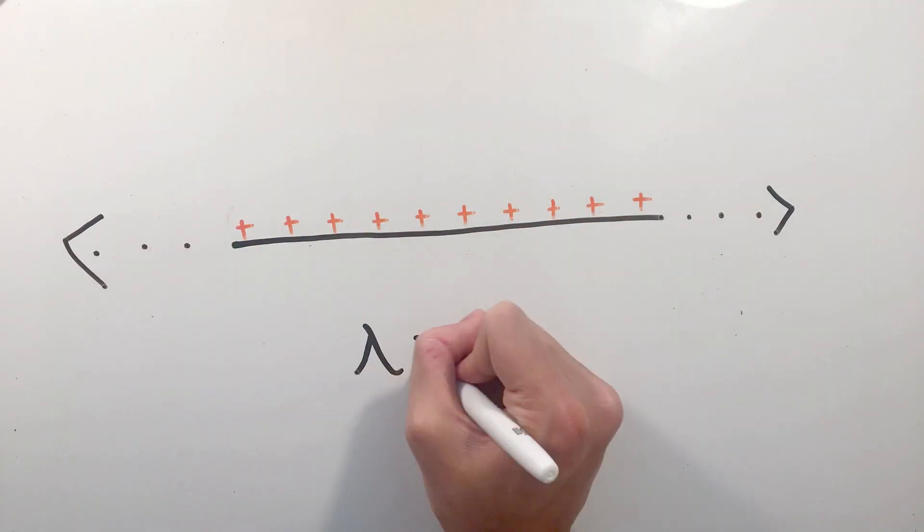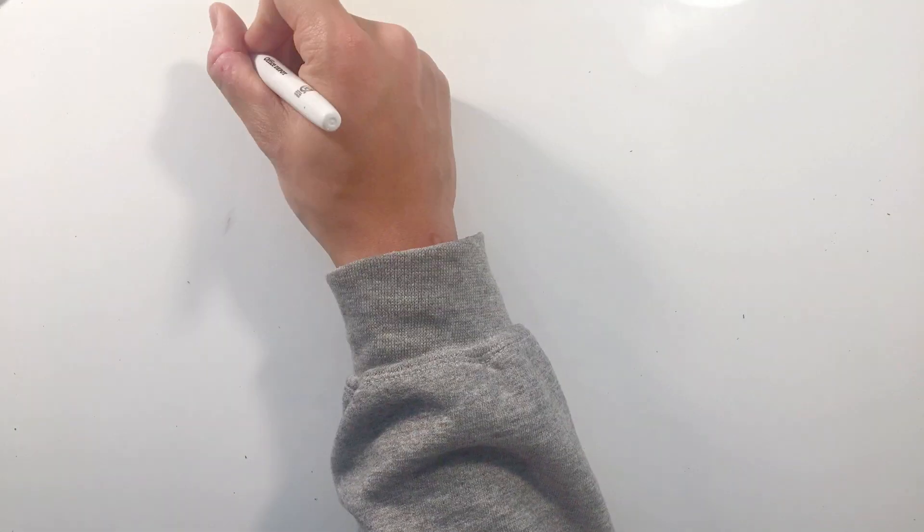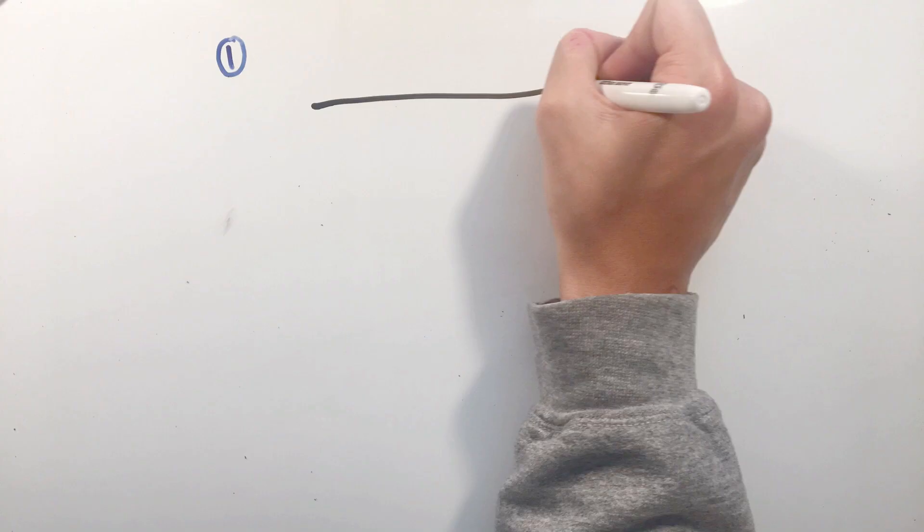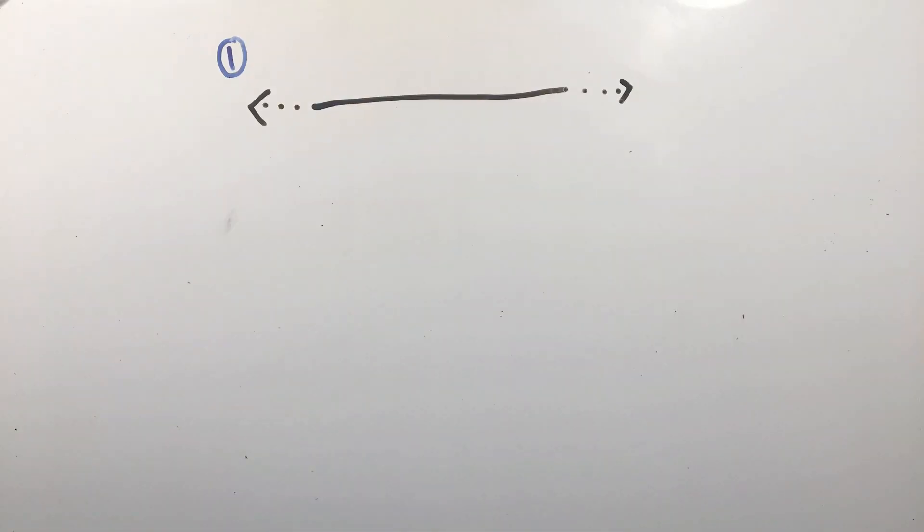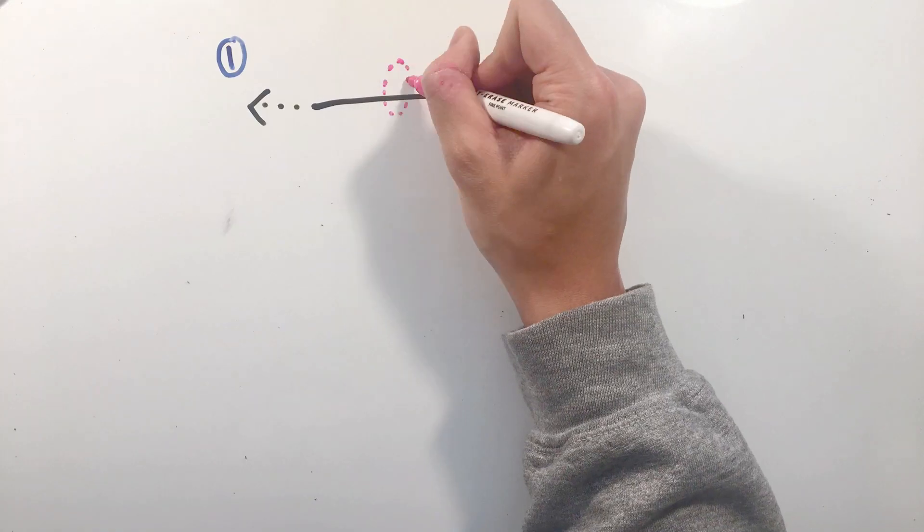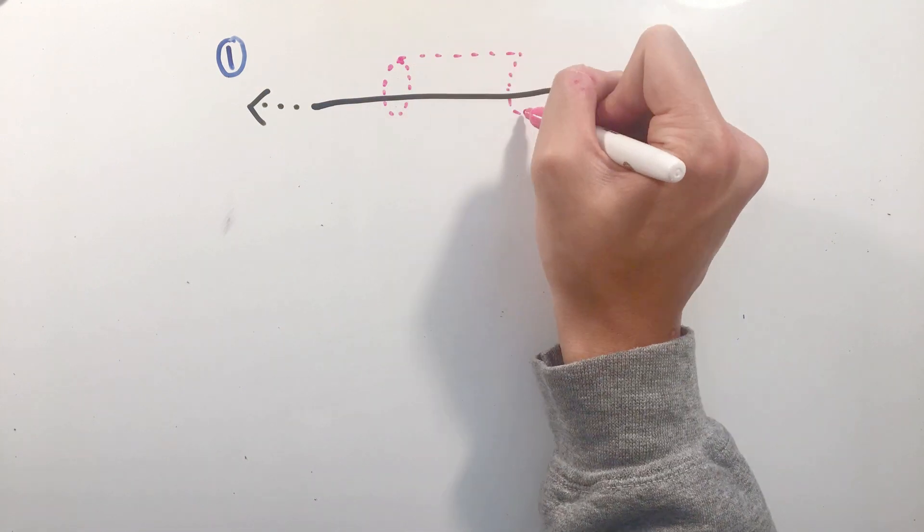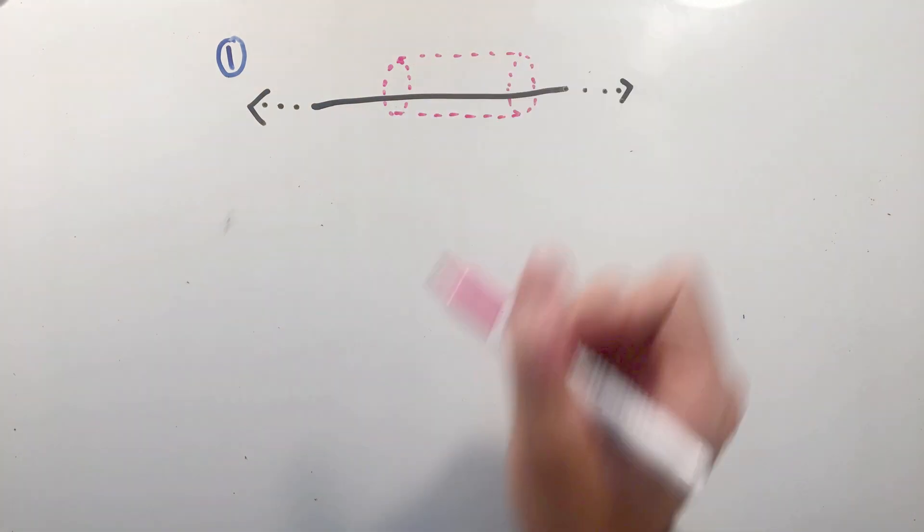starting first with a uniform infinite line of charge with linear charge density lambda. To begin, the charge distribution is uniform and infinite along an axis, meaning that the electric field will intuitively point radially away from this axis. Because of this, a great Gaussian surface to choose would be a cylinder with an axis that lies on this line of charge, with length and radius that we'll call L and R for now.